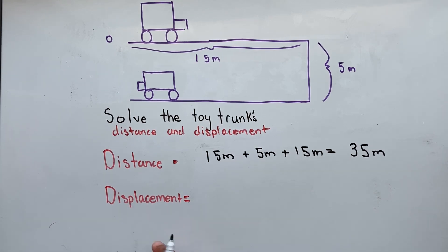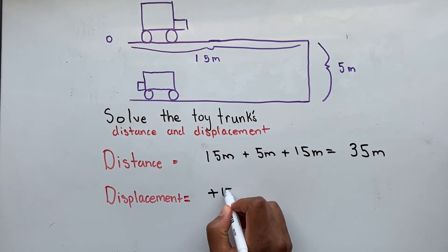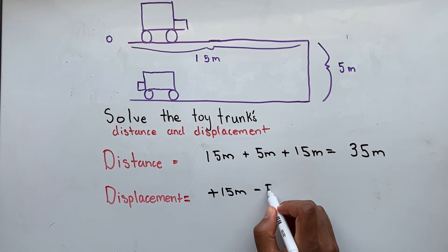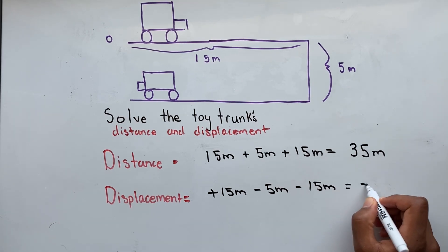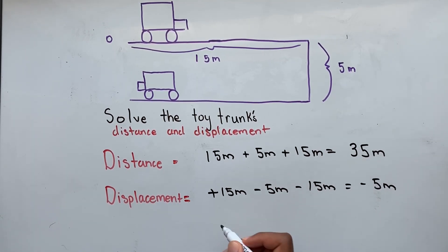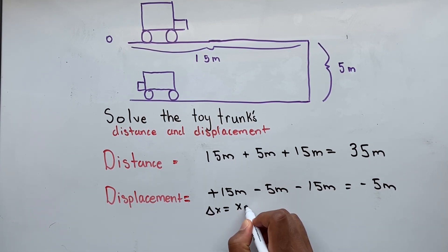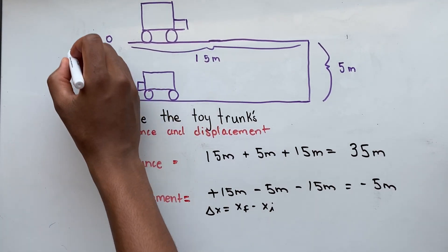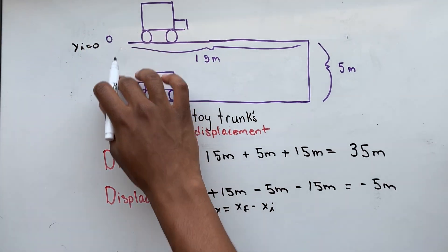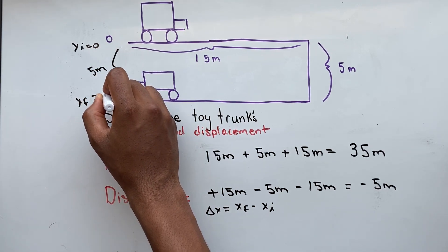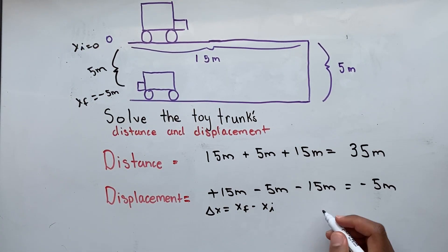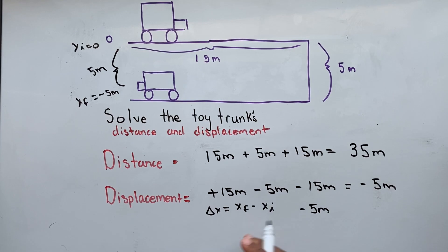Now let's solve for our displacement. Displacement is defined as the change in position of an object. Our toy truck traveled 15 meters to the right, so that's positive 15 meters. Then it traveled 5 meters down, so that's negative 5 meters. Then it traveled 15 more meters to the left, which is negative 15 meters. This gives us a total of negative 5 meters. The second way we can solve this is using the formula delta x equals our final position minus our initial position. We know our initial position is 0, and the distance between here is 5 meters, so our final position must be negative 5 meters. Plugging in: negative 5 meters minus 0 meters gives us negative 5 meters.